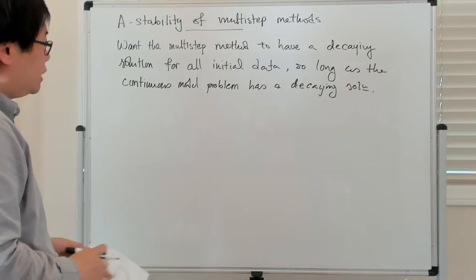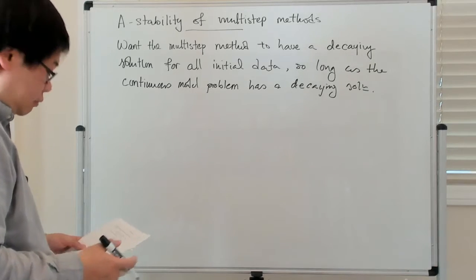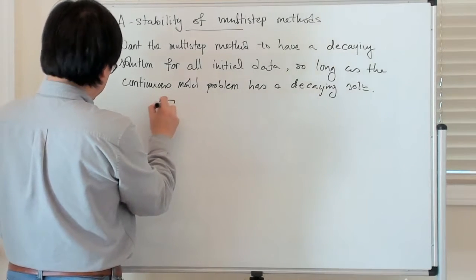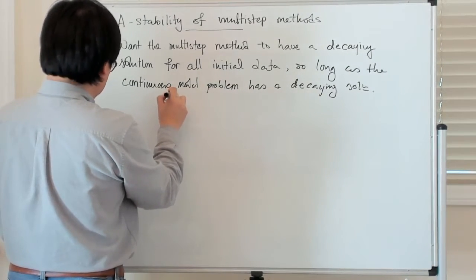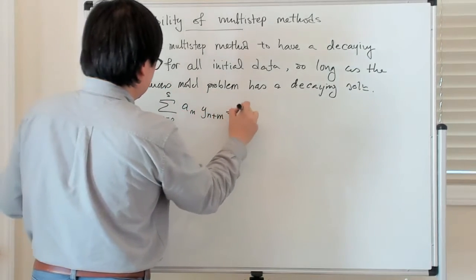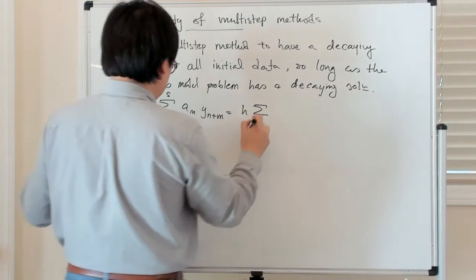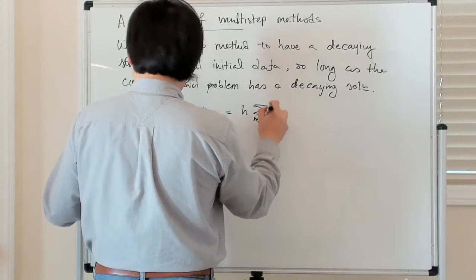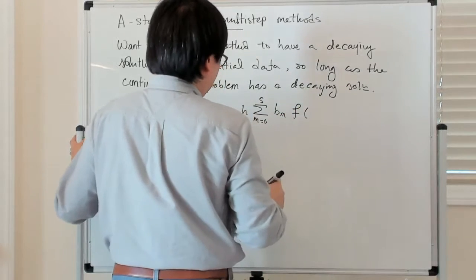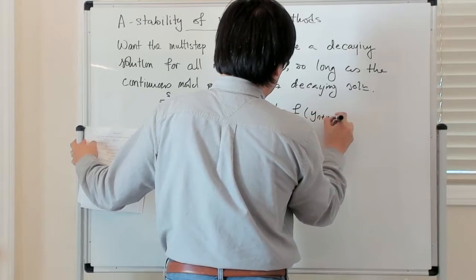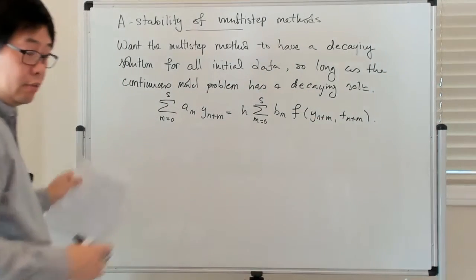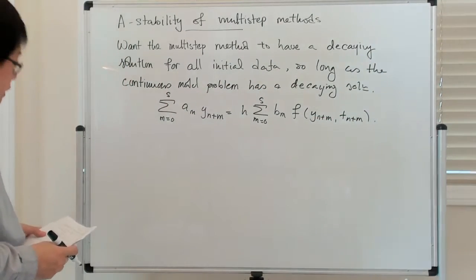Let's remind ourselves of what the general form of a linear multi-step method is. You have something which looks like: the sum from m equals 0 to s of a_m y_{n+m} is equal to h times the sum from m equals 0 to s of b_m f evaluated at y_{n+m}, t_{n+m}. That's the general form of a linear multi-step method.